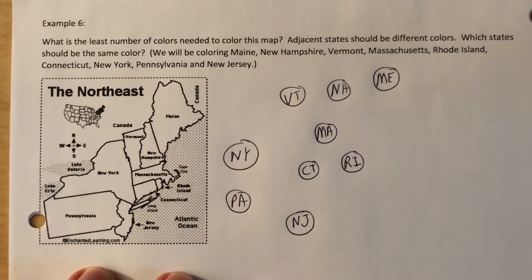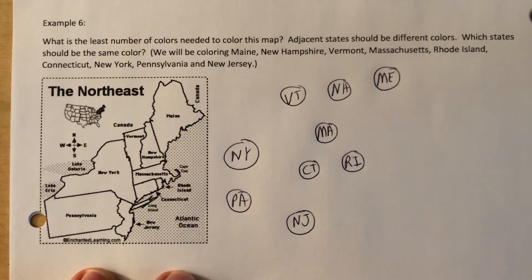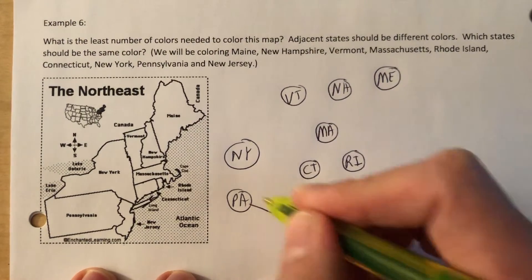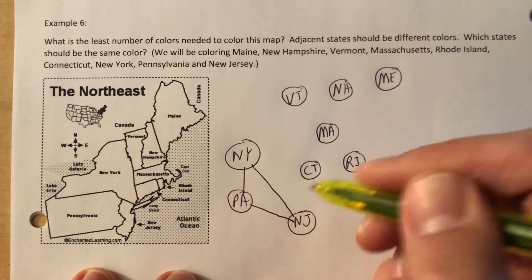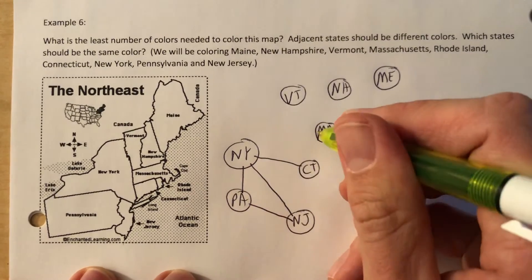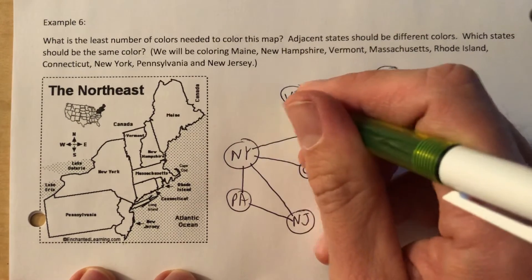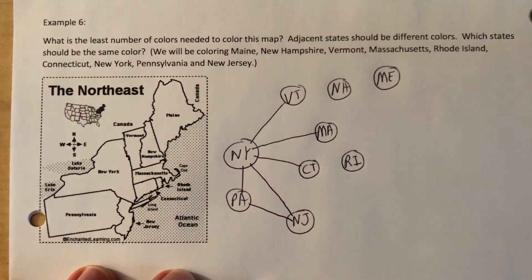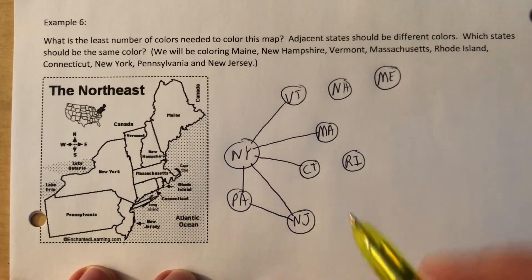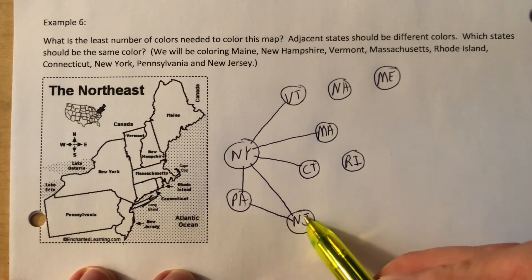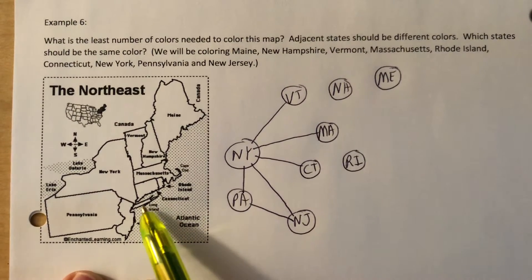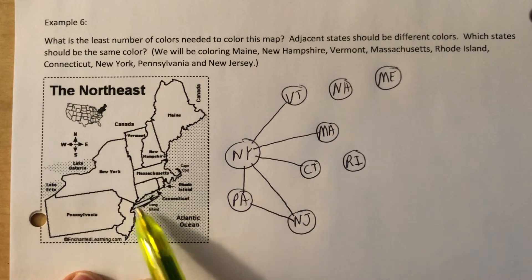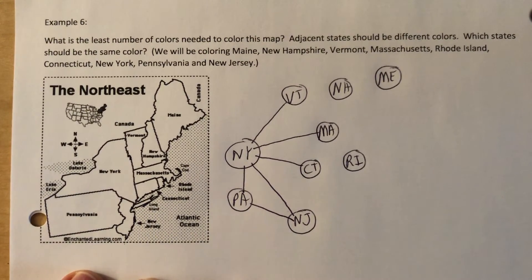Pennsylvania borders New Jersey and New York. New York borders Pennsylvania, New Jersey, Connecticut, Massachusetts, and Vermont. New Jersey borders just New York and Pennsylvania, not Connecticut. This little part right here is Long Island — that is technically part of New York, so let's not get too caught up in that. That's where New York City is.